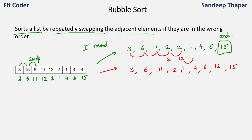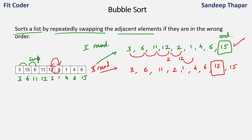So in each iteration we are putting the largest element at the end. In the first iteration we put 15 at the end, and in the second iteration we put 12 at the end. Like this we have to do many rounds, equal to the number of elements in the array, and in each round we put the largest remaining element at the end — that is how the array gets sorted. The name 'bubble' comes from the fact that we are comparing adjacent elements, which sort of forms a bubble. The algorithm is simple: compare adjacent elements and swap them if they are in the wrong order.